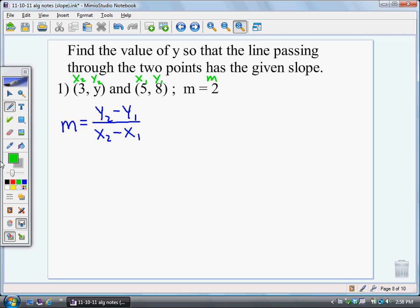The formula has five variables: m, y sub 2, y sub 1, x sub 2, x sub 1. And here are the five things we just listed. Just a matter of substituting. m is 2, y sub 2 is y, minus y sub 1 is 5. x sub 2 is 3, minus x sub 1 is 5.